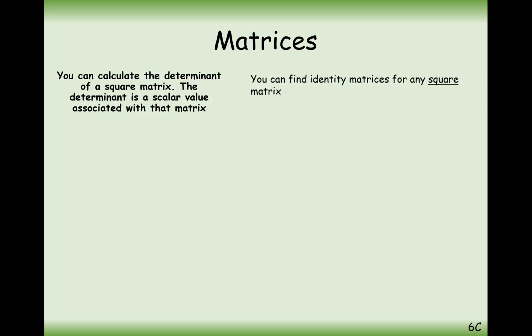The determinant is a value that can be attached to a square matrix. So we can only work out determinants on square matrices, such as this.